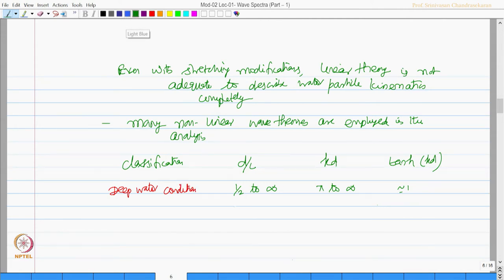If this is between 1 by 20 to half and this is pi by 10 to pi and this is simply tan hyperbolic KD itself, then we call this as transitional water depth.